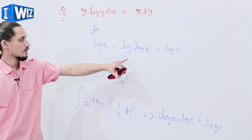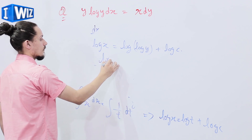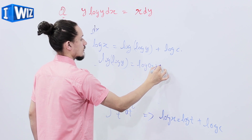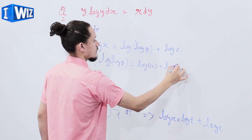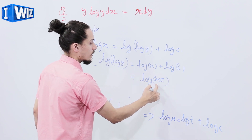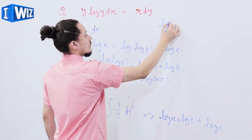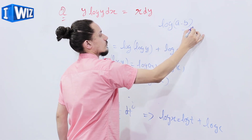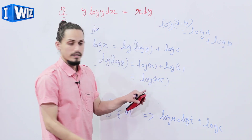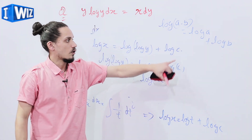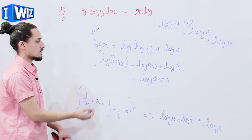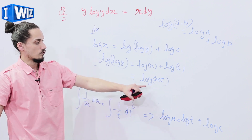Rearranging, we get log(log(y)) = log(x) + log(c), which implies log(log(y)) = log(xc). We know log(a) + log(b) = log(a·b), so the result of this differential equation is log(log(y)) = log(xc).